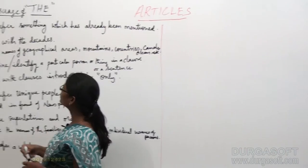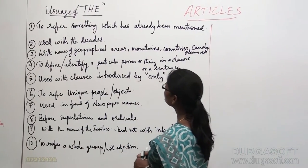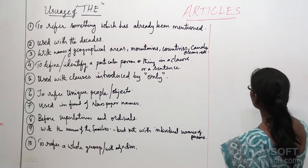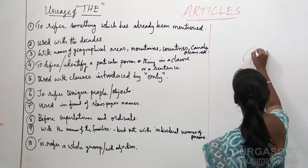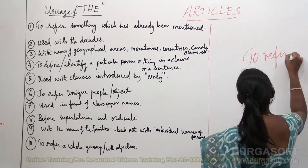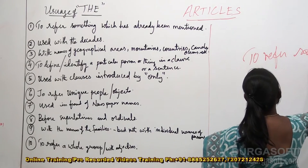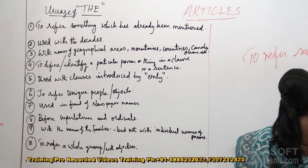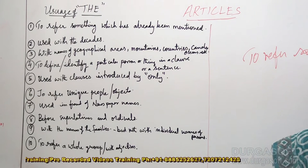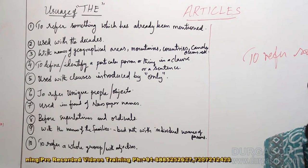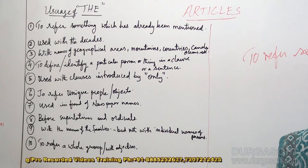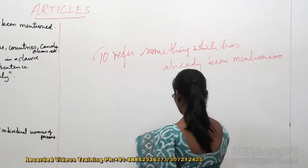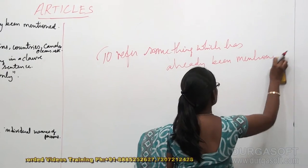This is the first rule: 'the' is used to refer to something which has already been mentioned. To refer to something which has already been mentioned — what do we mean by this?